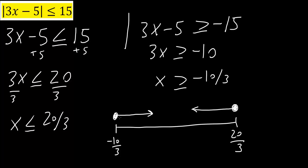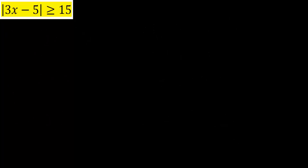If you notice, one arrow goes right and the other goes left, so when we combine the two, we get a straight line from negative 10 over 3 to 20 over 3. The answer can be any point in that interval. For example, 0 is an answer — plugging in 0, we get the absolute value of 0 minus 5, which is 5, and 5 is less than or equal to 15. Correct. Now we will do the second problem.